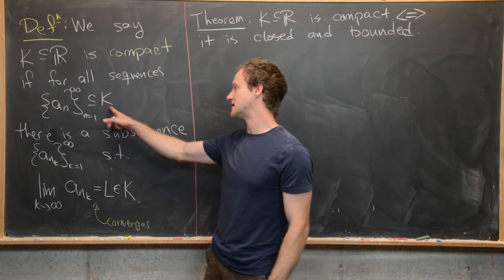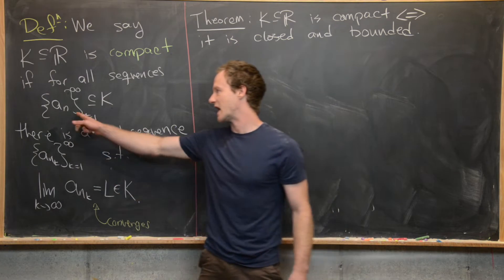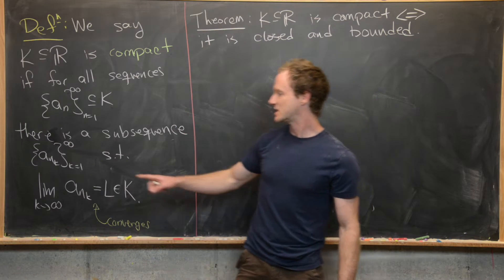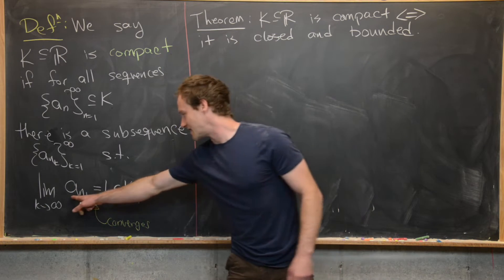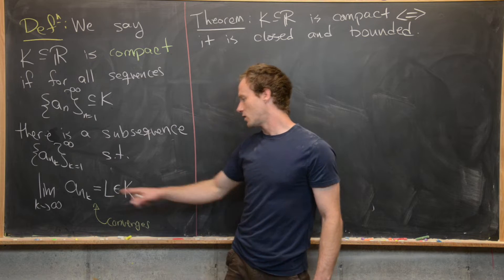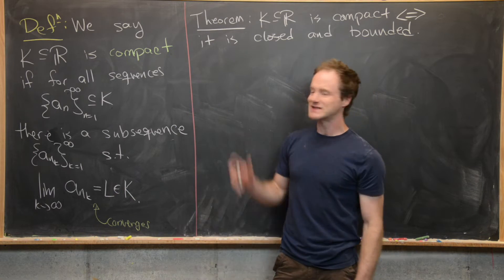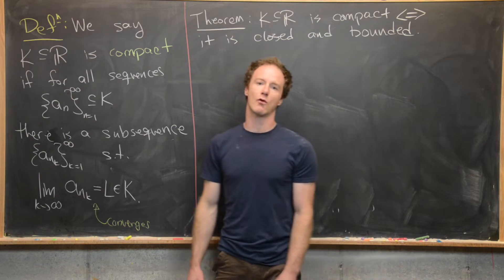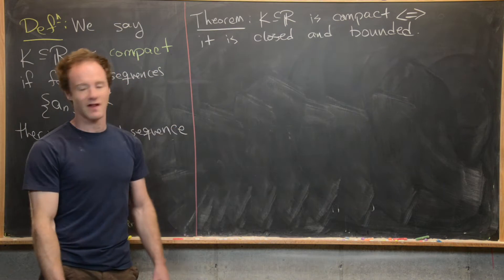We say that K, a subset of ℝ, is compact if for all sequences contained in K — written as the set containing a_n as n goes from 1 to infinity — there is a subsequence a_{n_k} such that that subsequence converges to a limit L which is inside of K. That's kind of a mouthful, so we would like something a little simpler to work with, and that's exactly what we'll prove in this video.